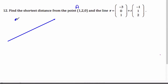And I want to find the shortest distance, which I know is when they're perpendicular. I know this direction here is negative 1, 1, 2. That's the direction.